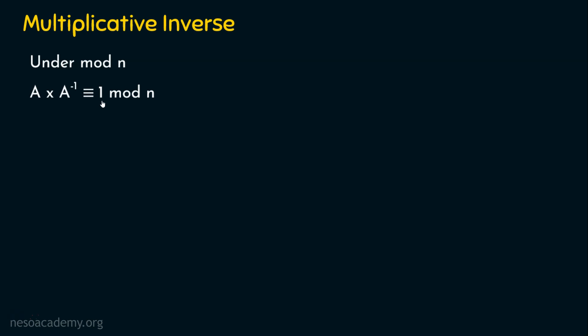We already saw that five multiplied by one-fifth equals one. But when finding the multiplicative inverse under mod n, there cannot be a fixed number. For example, the multiplicative inverse for 2 mod 5 is different from the multiplicative inverse for 2 mod 7. It's not simply 2 — it's 2 mod 5 and 2 mod 7, which may yield different inverses. Let's understand this clearly.